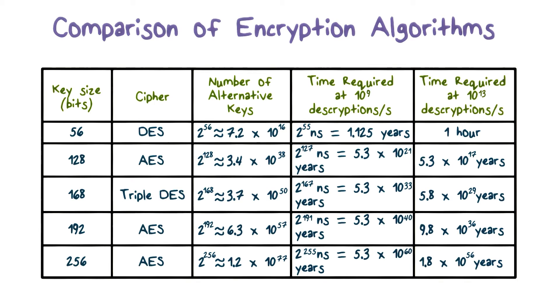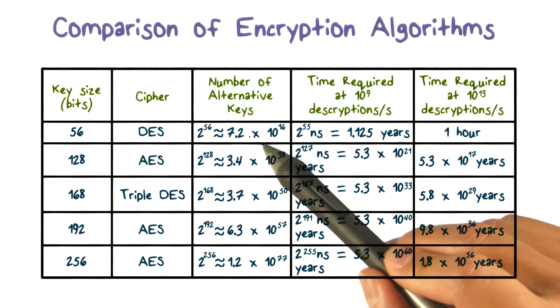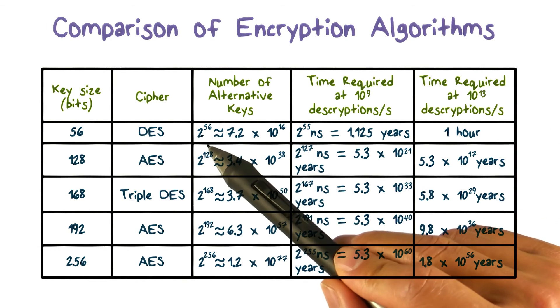This table shows how much time is required for a brute force attack for various key lengths. As we can see in the table, DES uses a key length of 56, and the number of possible keys is 2 to the 56.